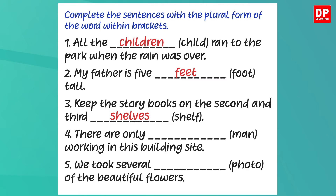The next sentence: 'There are only ___ (man) working in this building site.' Here again, you have to change the vowels when forming the plural of man. The answer is: 'There are only men working in this building site.' The last one: 'We took several ___ (photo) of the beautiful flowers.' Although photo is a noun ending in o, we don't add es because it is a borrowed word — we add only s. The completed sentence: 'We took several photos of beautiful flowers.'